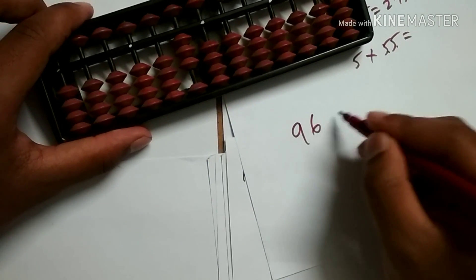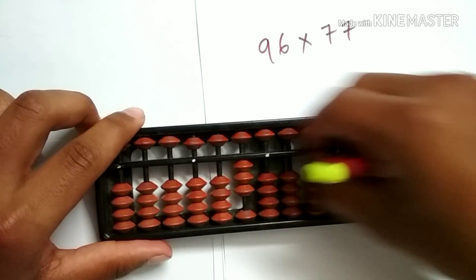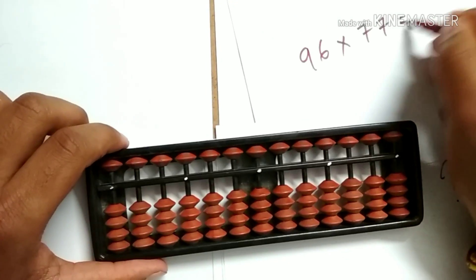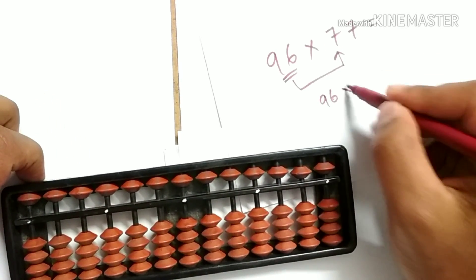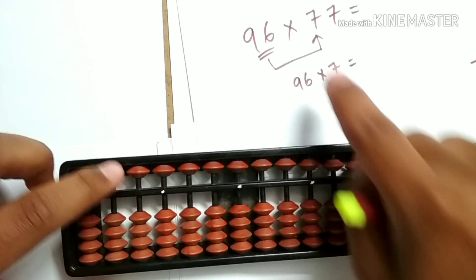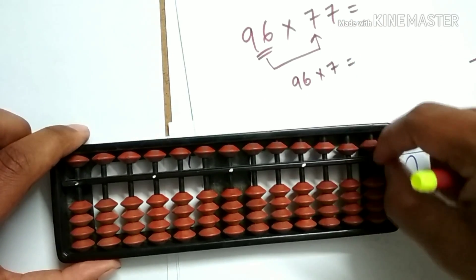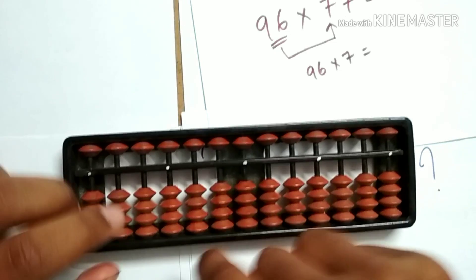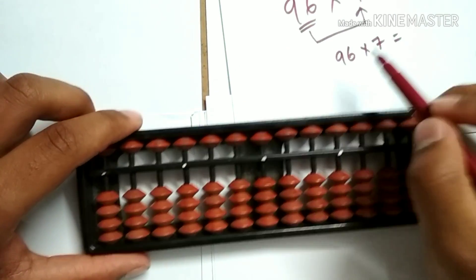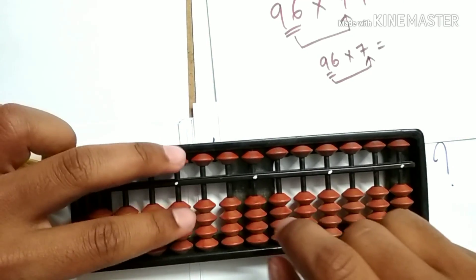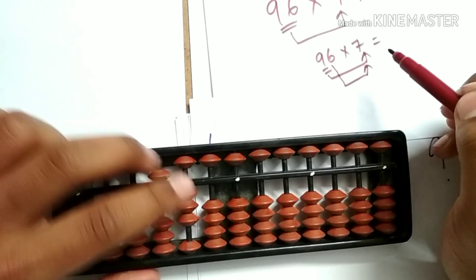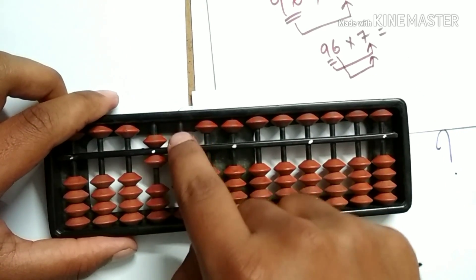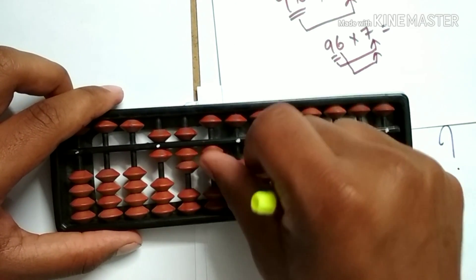The other question was 96 multiplied by 77. This is a little difficult one because it includes lazy friend addition. This can be broken down into 96 into 7. This is a 2-digit into 2-digit multiplication, so the answer would be a 4-digit number. Let's start placing the answer from the 1000th place. 9 into 7 is 63, 6 into 7 is 42. Let's add 42 on the 100th place — add the friend 5, less the friend 1. And add 2 on the 10th place.